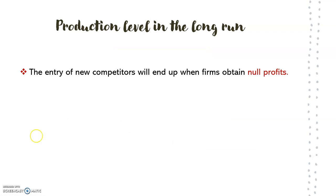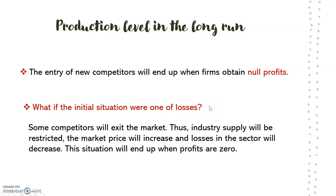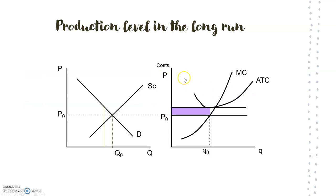The entry of new competitors will end when firms obtain zero profits. But what if the initial situation is one of losses instead of positive profits? What will happen is that some competitors will exit the market. The industry supply will be restricted, the market price will increase because there will be fewer firms offering the product, and the losses in this sector will decrease. This situation will end when profits are zero.